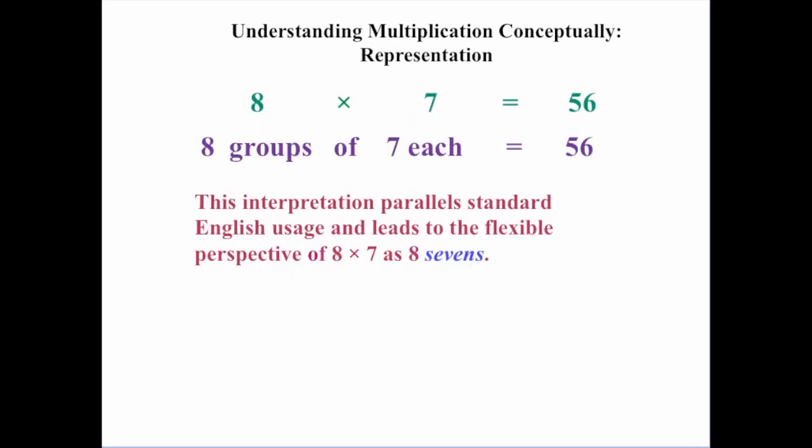That interpretation parallels standard English usage, and it leads to the flexible perspective of 8 times 7 as eight 7s. In standard English, we might have something like 8 bears, where the rule is we have the adjective here followed by the noun. Interpreting the 8 times 7 as 8 groups of 7 each parallels this, so that we eventually will see 8 times 7 is eight 7s.